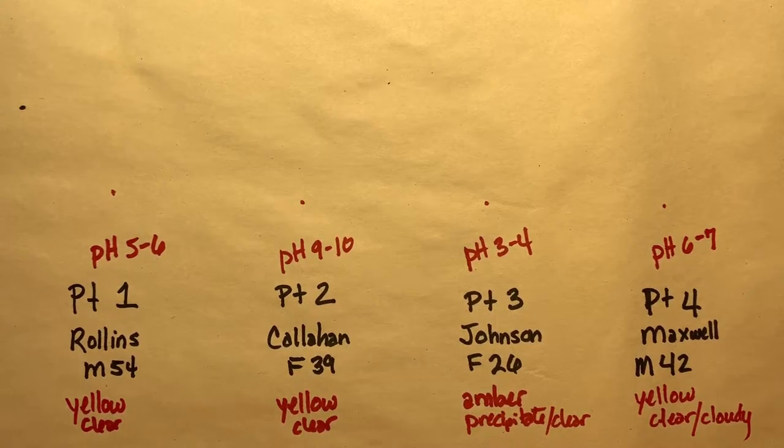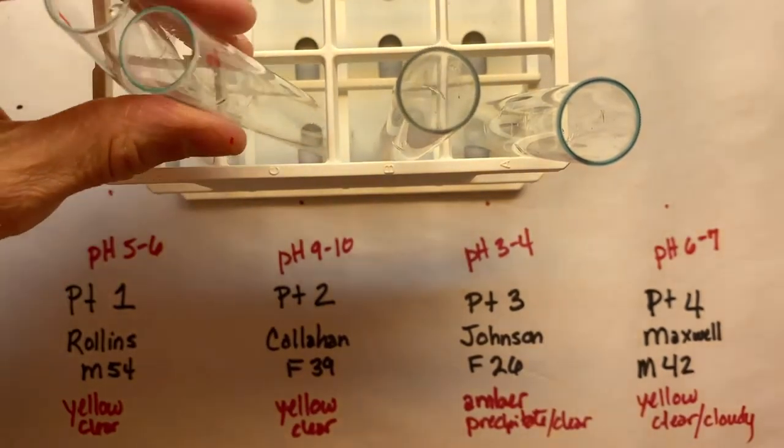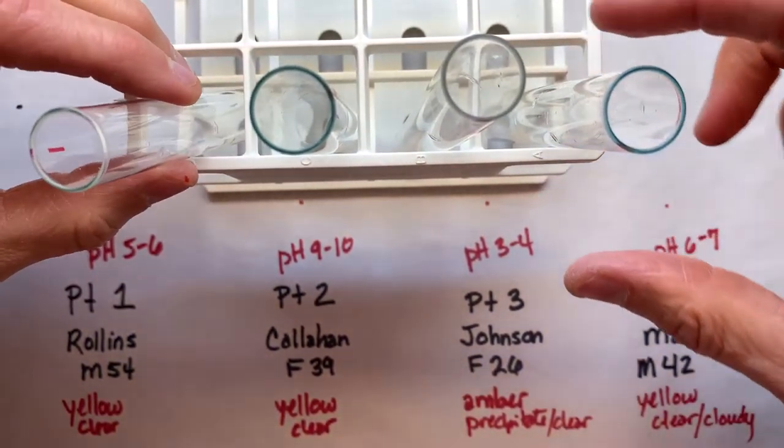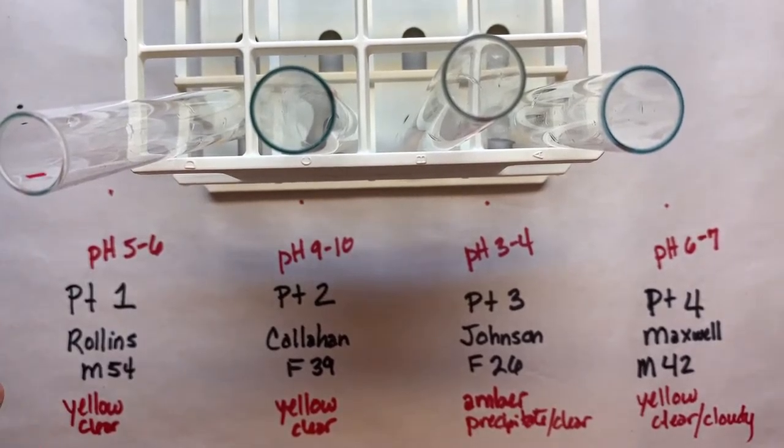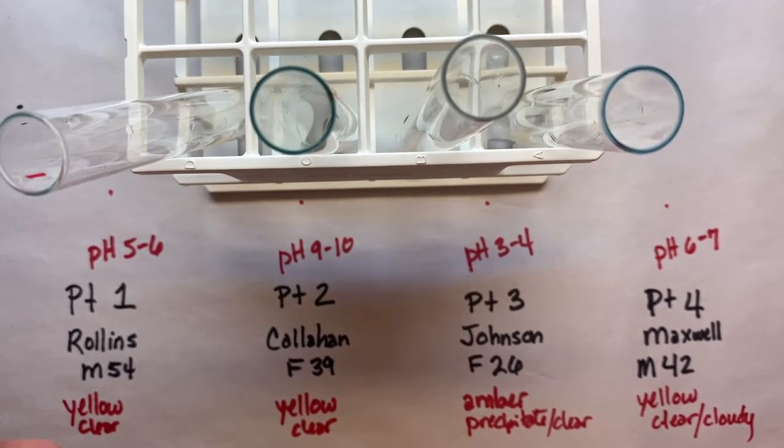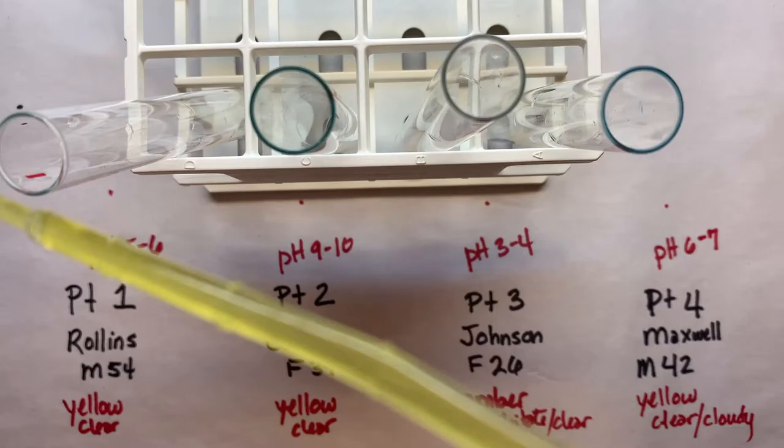So let's get our rack of test tubes, one test tube for each of these patients. The test tubes are numbered. Let's go ahead and add the urine from each patient into our test tube.